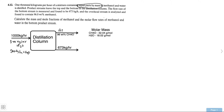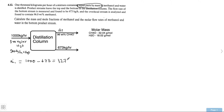Now that we know this, we can go ahead and find what M1 is. Because this is a steady-state problem with no accumulation, what's coming in has to equal what's coming out. So M1 is simply 1,000 minus 673, which equals 327 kilograms per hour coming out of the overhead.